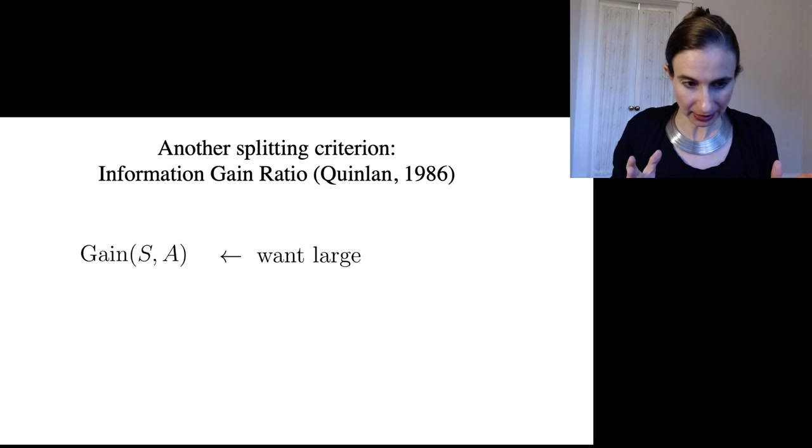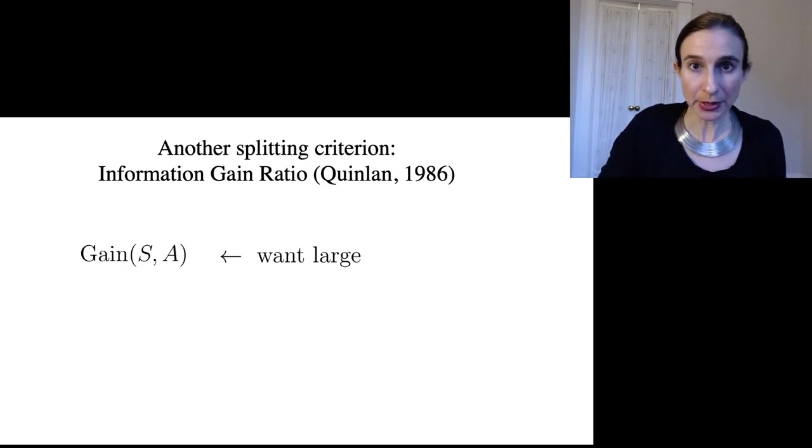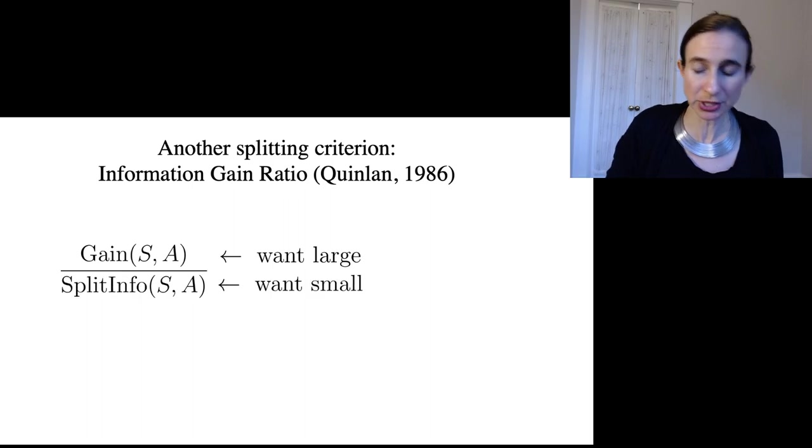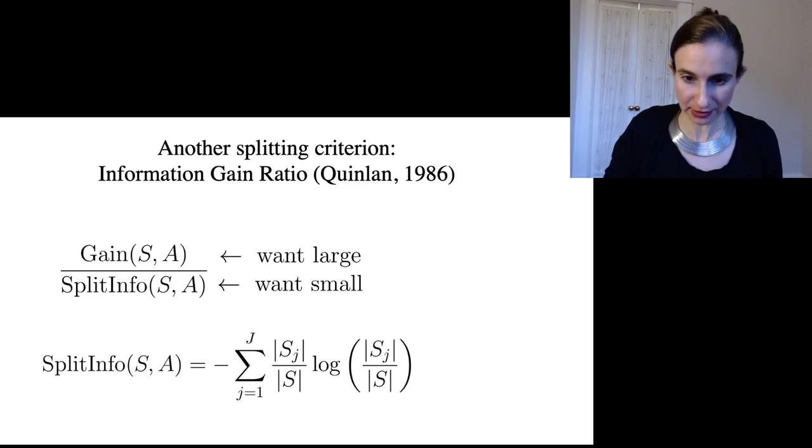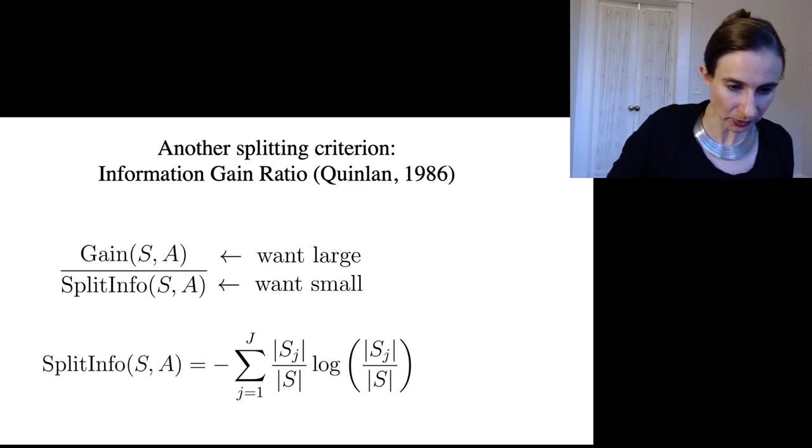We have the gain, which we want to be large, but we also have another quantity that we're going to balance against it, which we want to be small, which is called the split information. The split information looks like this, and what these quantities are...